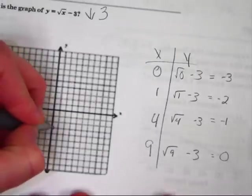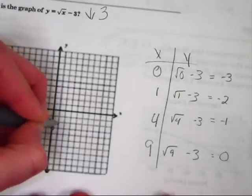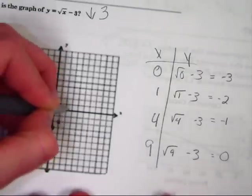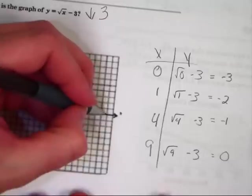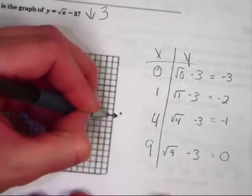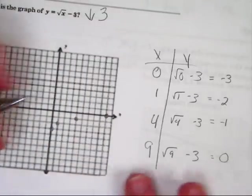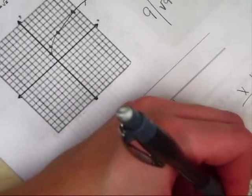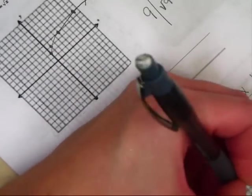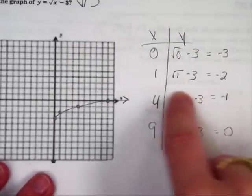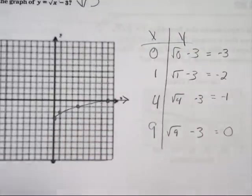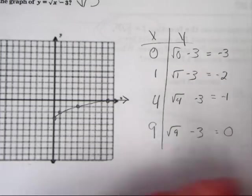Let's plot our new points: (0, -3), (1, -2), (4, -1), and (9, 0). Take a look at how this graph from the parent function has just moved down 3 units from the origin. It still has this almost half-parabola shape. And there you go — we've got our square roots moving up and down.